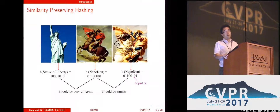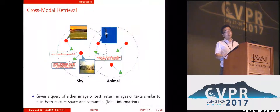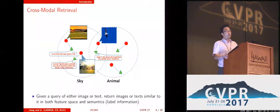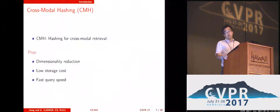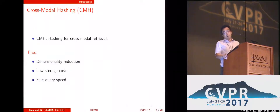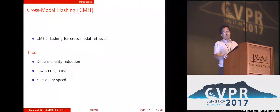The basic idea of hashing is to map the data points from the original space to a binary code space. In many real applications we may encounter cross-modal data, and we need to perform cross-modal retrieval. For example, the input query can be text and we want to retrieve images from an image dataset. So we can use cross-modal hashing to speed up these retrieval applications.